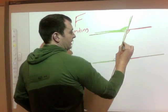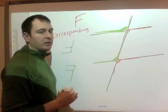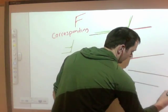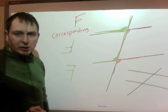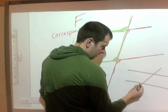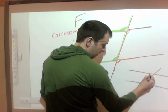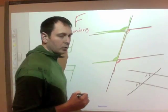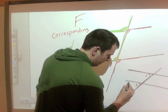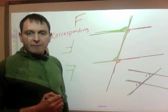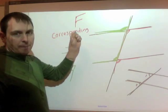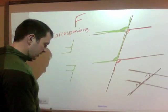Another set of corresponding angles would be these two, because they share that upside-down F — this angle here and this angle here. A backwards F would also have angle one and two making a backwards F. You need to be able to see all of these F shapes and know that the term for them is corresponding.